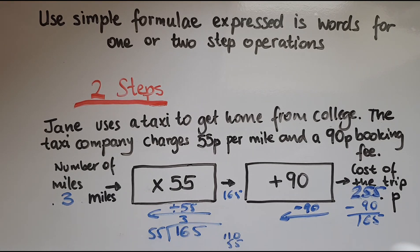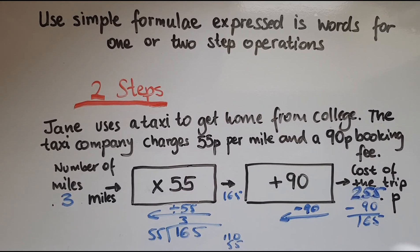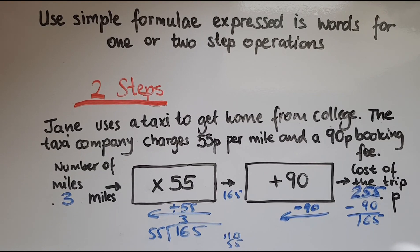It was really important to follow the steps in order, because otherwise you'd get a different answer. If you added 90 first and then multiplied by 55, it would give you a completely different, larger number. We just want to follow the steps. Another example is currency conversion — if a shop charges a fee for converting money, you'd deduct the fixed fee first and then apply the conversion rate. There are many examples in everyday life where we use this, and it's something we improve on by doing more and more examples.